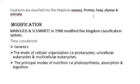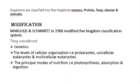After that, Margulis and Schwartz in 1988 modified the five kingdom classification system. While the original system was based on cellular organization and mode of nutrition, their modification also included genetics as an additional basis for classification.